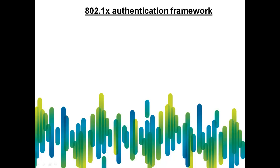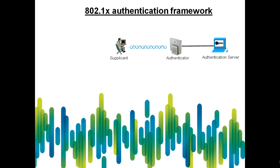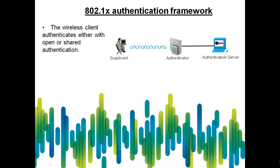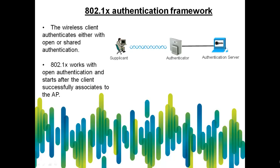The 802.1X framework requires three entities: the supplicant, which is the client; the authenticator, which in our case is the access point; and the authentication server, which could be a RADIUS server. When a wireless client becomes active, it authenticates using either open or shared authentication.